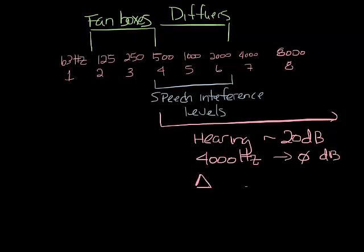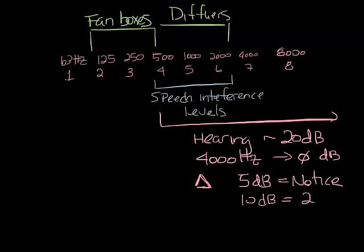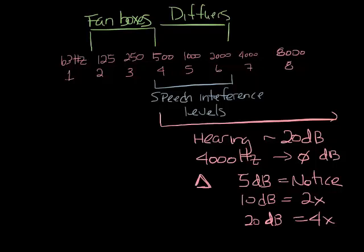But when it comes to the difference in sounds at high frequencies, we really can't perceive the difference less than 3 dB. We need about 5 dB to notice the difference between two sounds. 10 dB sounds twice as loud, and a 20 dB difference is four times as loud. So at 4,000 hertz, a 60 dB sound would be twice as loud as a 50 dB sound, and a 70 dB sound would be four times as loud.